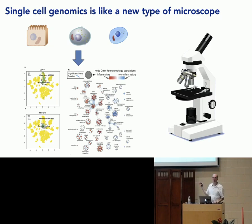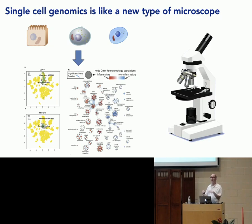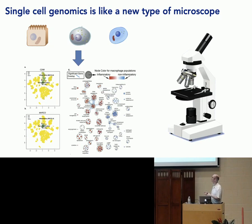Going back to the microscope — the way I like to think about this is that this technology is like a new kind of microscope. The microscope let us see cells and understand their shape and structures within a cell. But now with single cell genomics, we can understand a lot more. We don't see the shape anymore, but we see a lot of how the cell is functioning — all the gene combinations that are expressed. We know a lot about genes, so once we read out the genes expressed within a cell, we can find out what functions those genes are known to have and what biological pathways they're involved in.